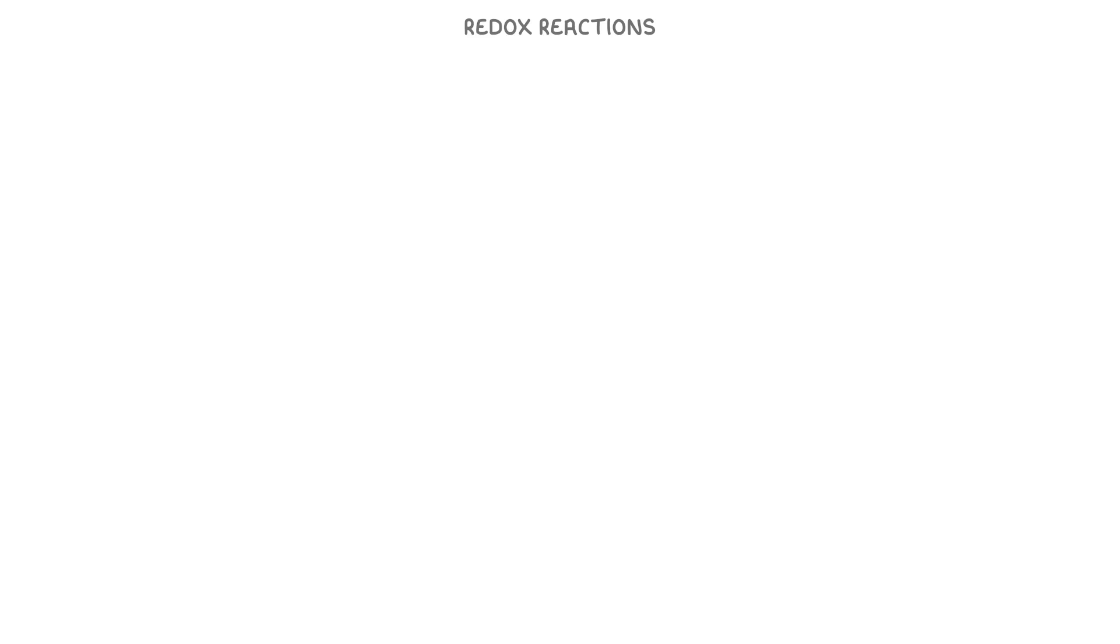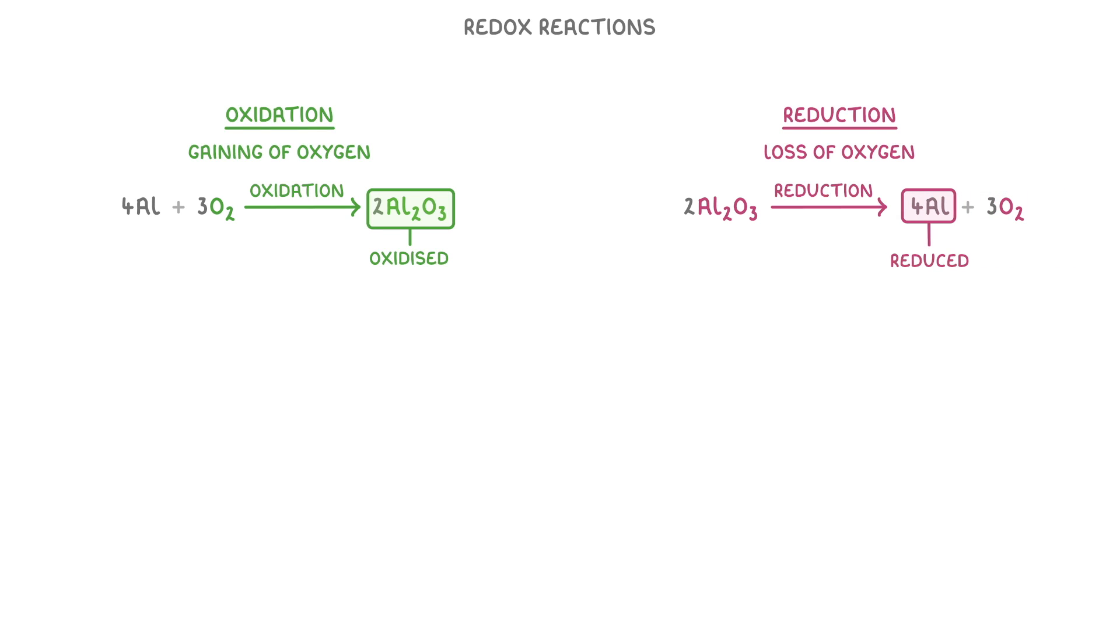We saw in a previous video that one meaning of oxidation is the gaining of oxygen, and that reduction is the loss of oxygen. For example, if aluminium reacts with oxygen to form aluminium oxide, we can say it's been oxidised, whereas if we take away that oxygen, then it's been reduced.